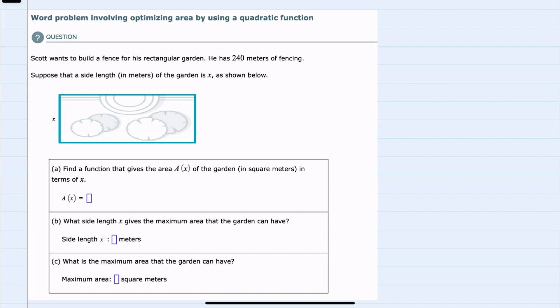In this video, I'll be helping you with the Alex problem type called Word Problem involving optimizing area by using a quadratic function. We're told that Scott wants to build a fence for his rectangular garden and that he has 240 meters of fencing.